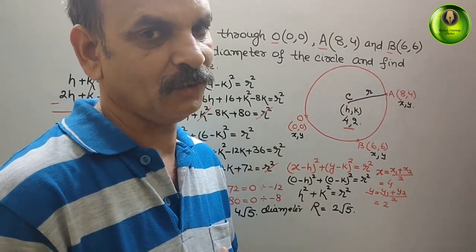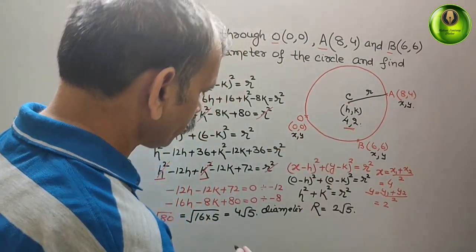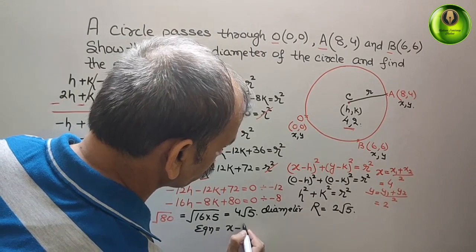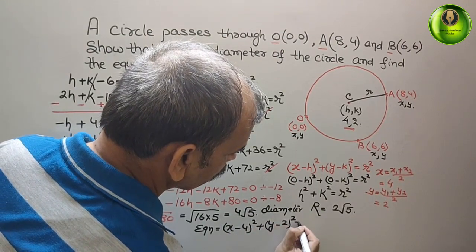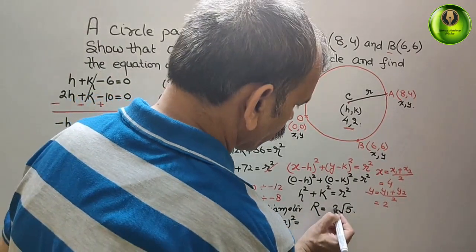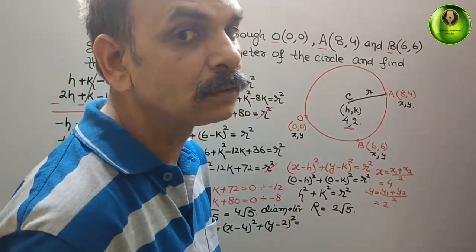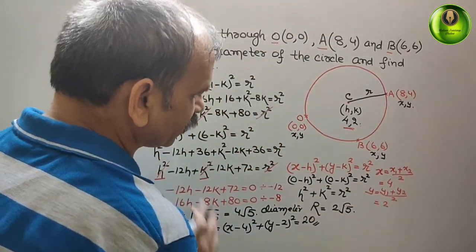So the equation of the circle is: (X - H)² + (Y - K)² = R². With H = 4, K = 2, and R = 2√5, we get (X - 4)² + (Y - 2)² = (2√5)² = 4 × 5 = 20. So the equation of the circle is (X - 4)² + (Y - 2)² = 20.